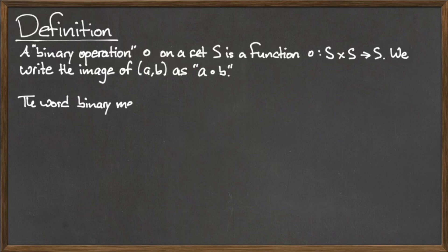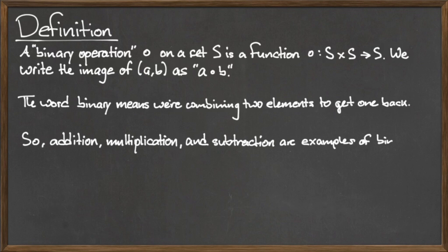The word binary in the term binary operation means that we are combining two input elements to get one output element. As we've just seen, addition, multiplication, as well as subtraction are all binary operations, but we are not limited to just these.